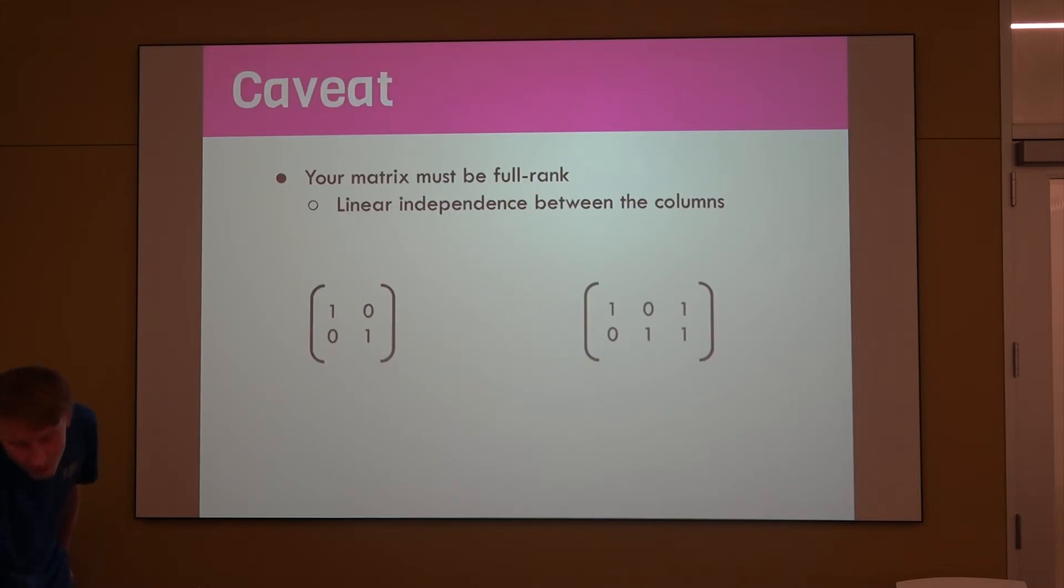There's some caveats to this. Can we always find a matrix inverse? And the answer is no. This is going to require some special conditions. The main thing is that your matrix is full rank. More formally, you need linear independence between the columns and you need a square matrix. So linear independence, what does this mean? It means that all of your columns are going to be providing you some useful information or some non-redundant information.